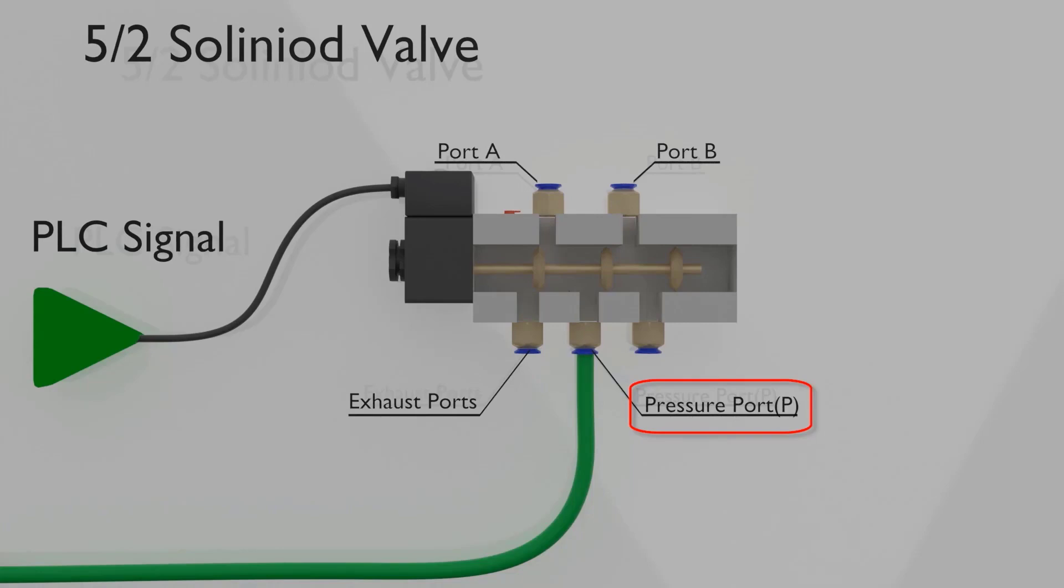The pressure port P is linked with either port A or port B when the spool inside the valve moves. So when port P is linked with port A, the spool blocks the entry of the air towards port B. Similarly, when port P is linked with port B, the spool blocks the entry of the air towards port A.